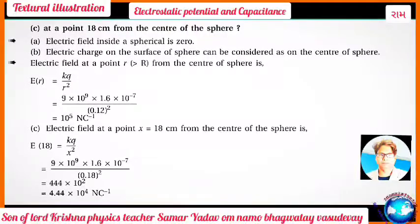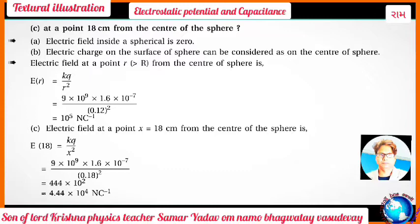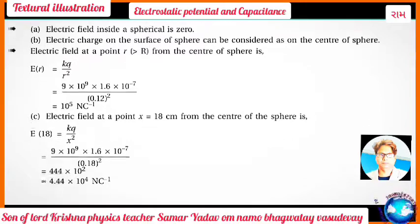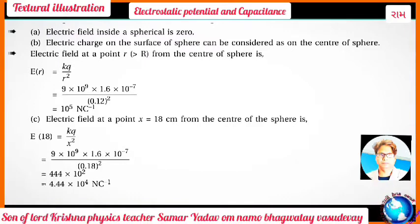For part C, the electric field at point X = 18 cm from the center: E = KQ/X² = 9×10⁹ × 1.6×10⁻⁷ / (0.18)² = 4.44×10⁴ N per coulomb.